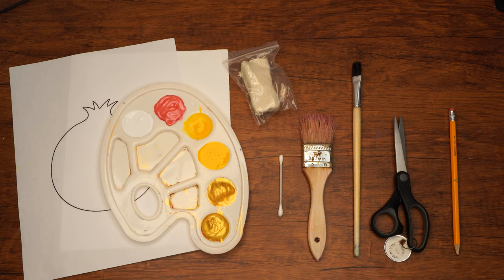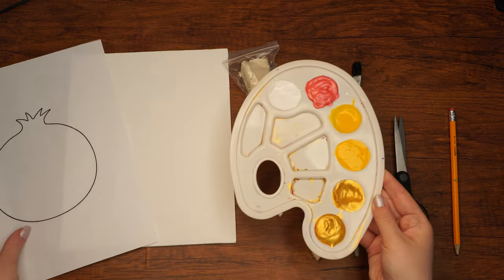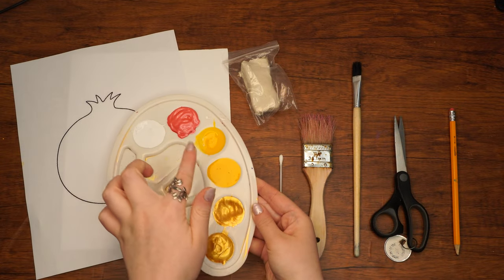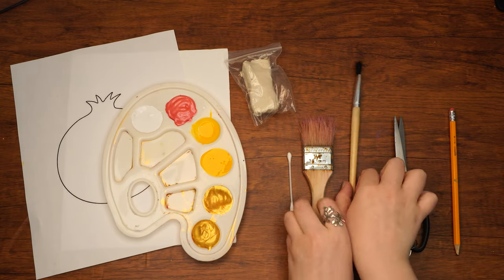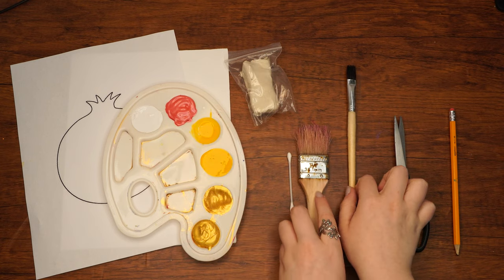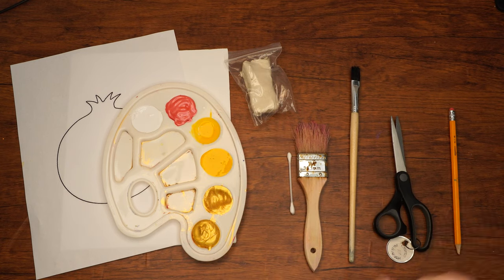Here are the supplies we will need: a canvas, the printed pomegranate template, white, red, yellow and gold paint, clay, a q-tip, both a medium-sized and small-sized paintbrush, scissors, and a pencil.